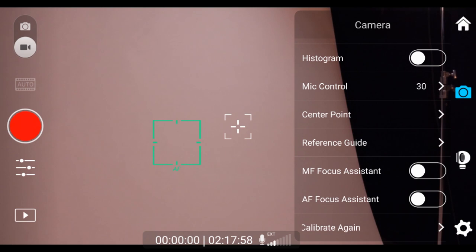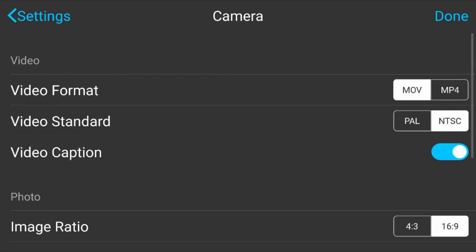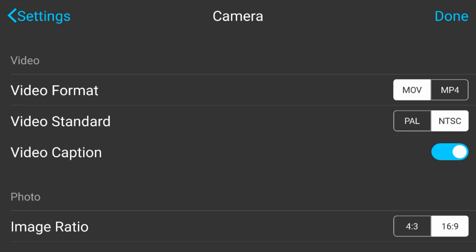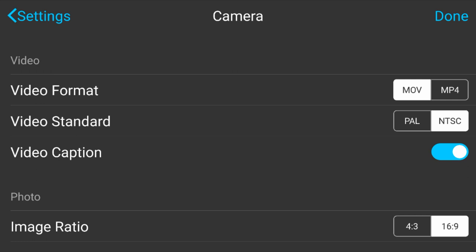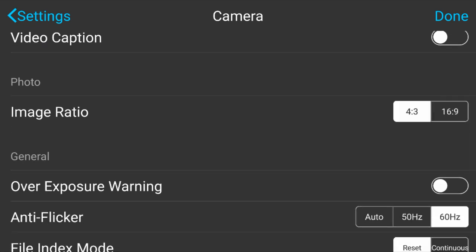For advanced camera control, hit the gear icon in the bottom right, and then camera. Here you can adjust the video format to either MP4 or MOV, as well as the video standard to NTSC or PAL. You will also see an option for video caption. By turning this on, the camera records GPS data as well as your camera's settings into a subtitle file that is recorded next to the main video file. I generally keep this turned off, but it can be helpful for logging footage after a shoot. Below that, you can adjust the aspect ratio for still images, either as 4:3 or 16 by 9.